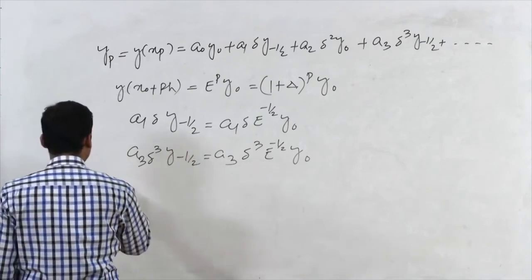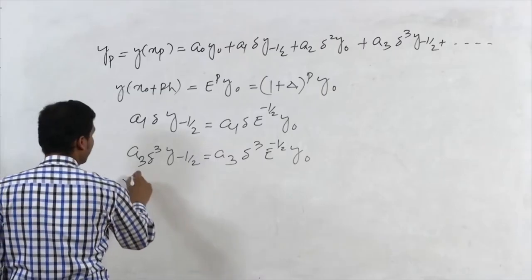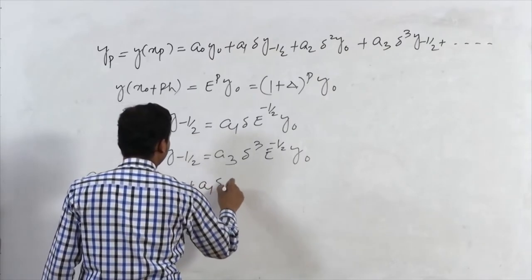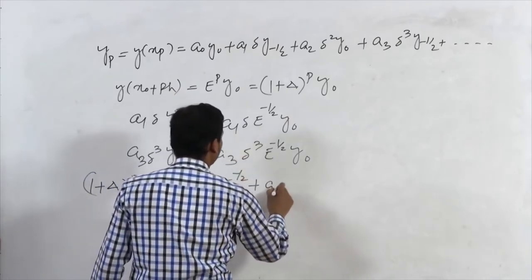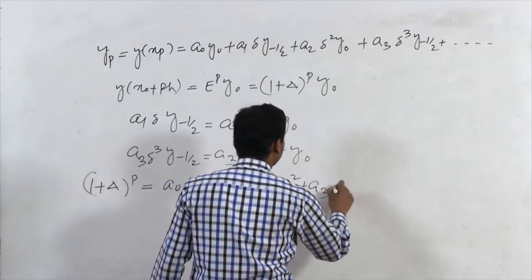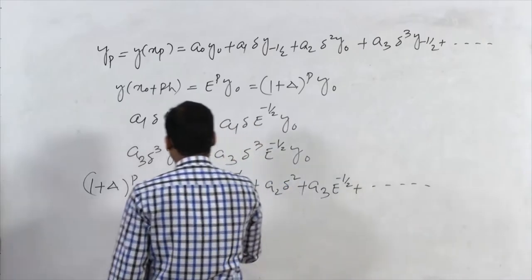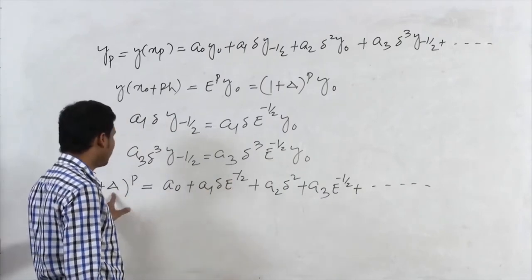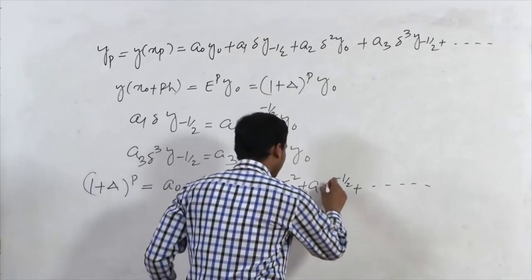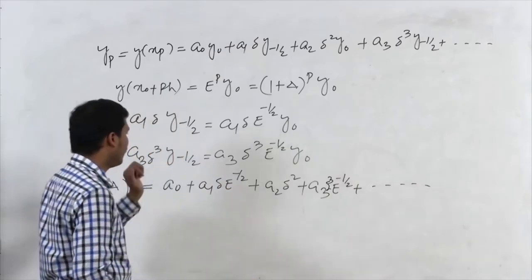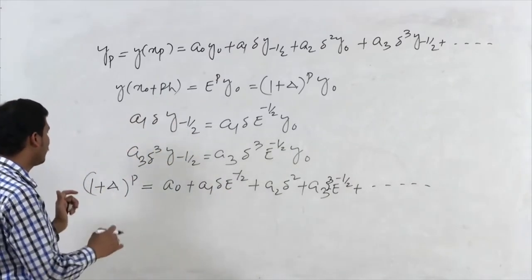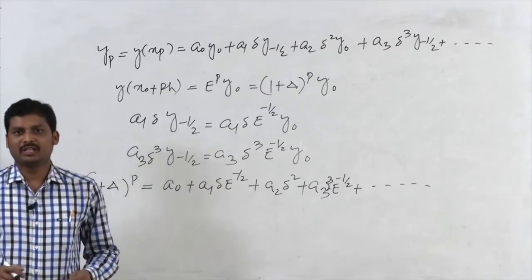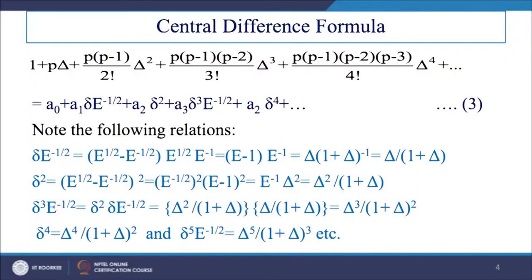Expressing both sides in operator form with Y₀ as common factor, the left-hand side (1 + Δ)^p equals the right-hand side A₀ + A₁·Δ·E^(−½) + A₂·Δ² + A₃·Δ³·E^(−½) and so on. By expanding Δ·E^(−½) and Δ³·E^(−½) in terms of capital Δ, then equating coefficients, we obtain values for A₀, A₁, A₂, and A₃ for the Gauss backward formula.